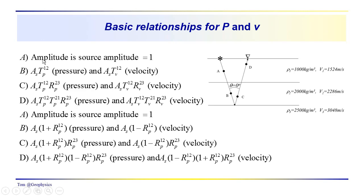In your calculations, we went through the development of some basic relationships. We know that as we go from A to B, the amplitude at B will be the amplitude at the source — we are assuming plane waves with no absorption. So the amplitude at point B is going to be the amplitude at the source times the transmission coefficient between layers one and two for pressure, and times the transmission coefficient between layers one and two for particle velocity.